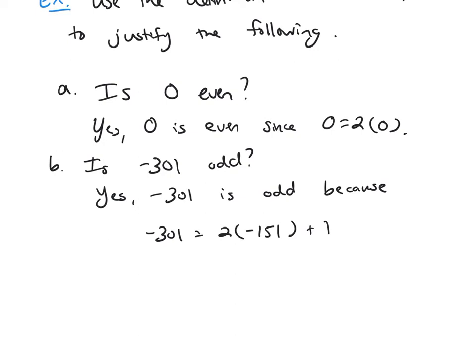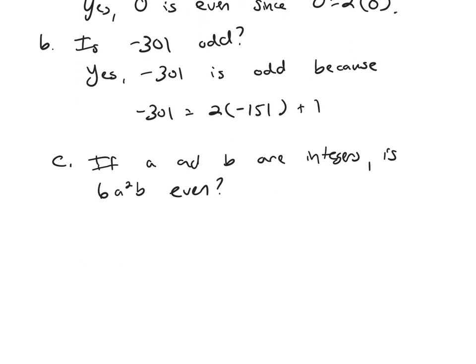So now let's ask some more arbitrary questions, not about specific numbers. Say if a and b are integers, is 6a squared b even? Well, if you notice, there's a 6 there, which means I can factor out a 2. So the answer is yes, 6a squared b is even, because to be even, you have to write it as 2 times something, and what goes in this something is 3a squared b.